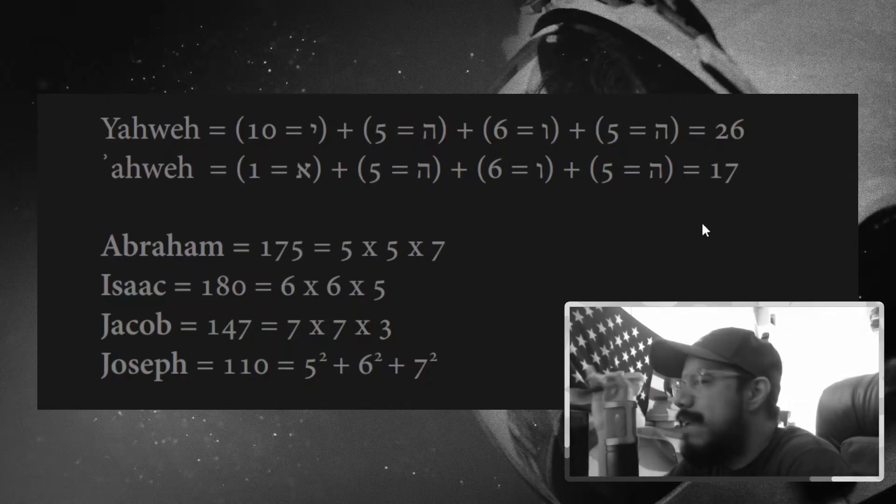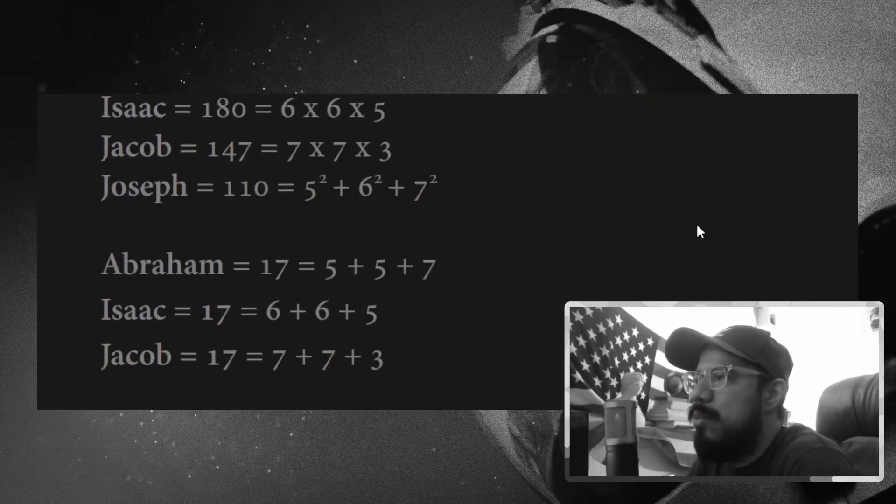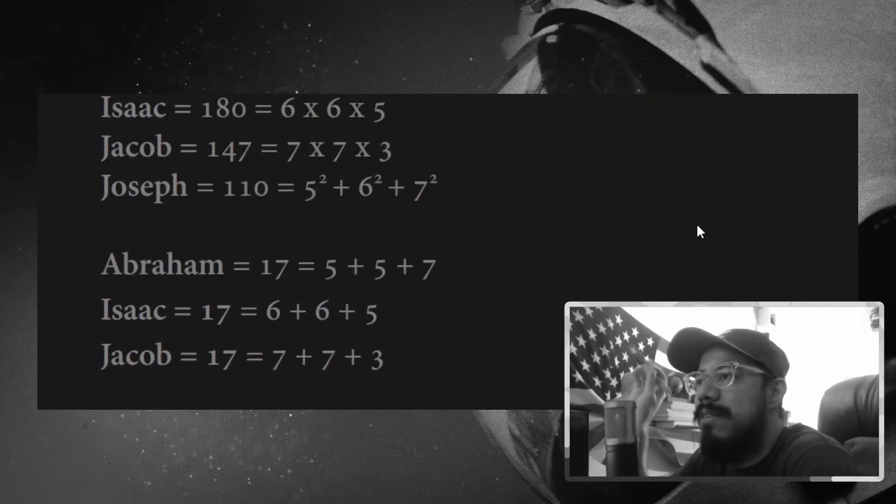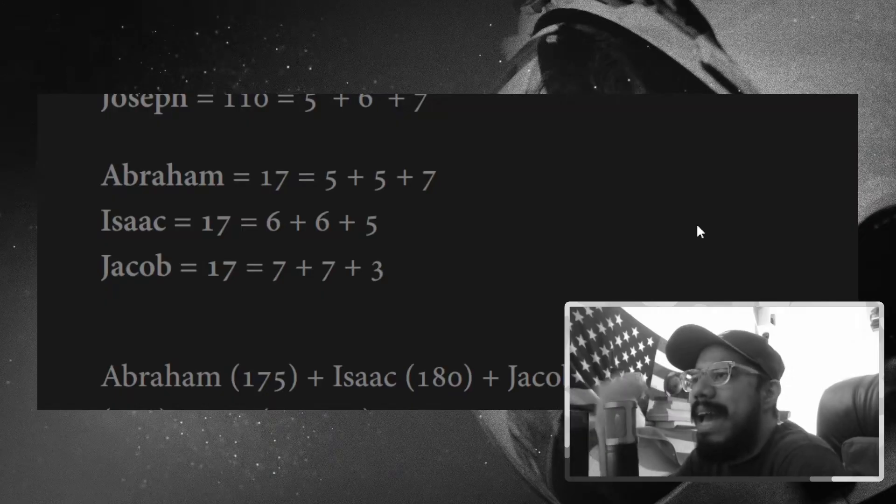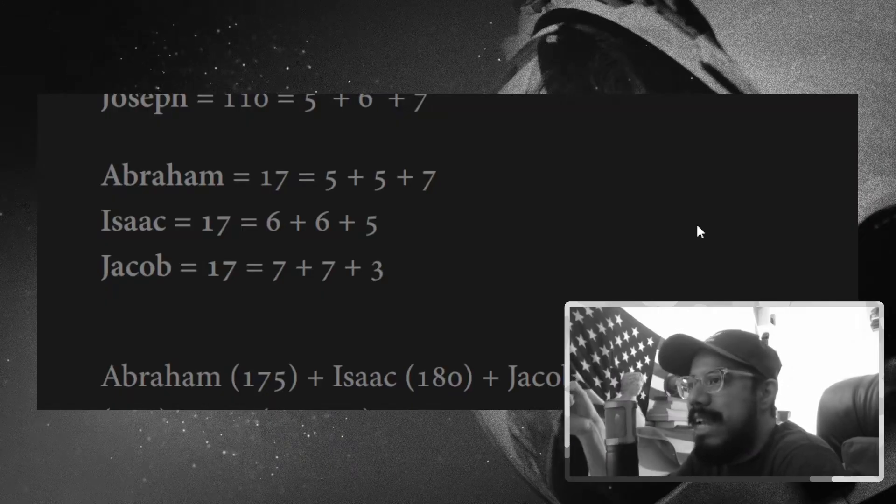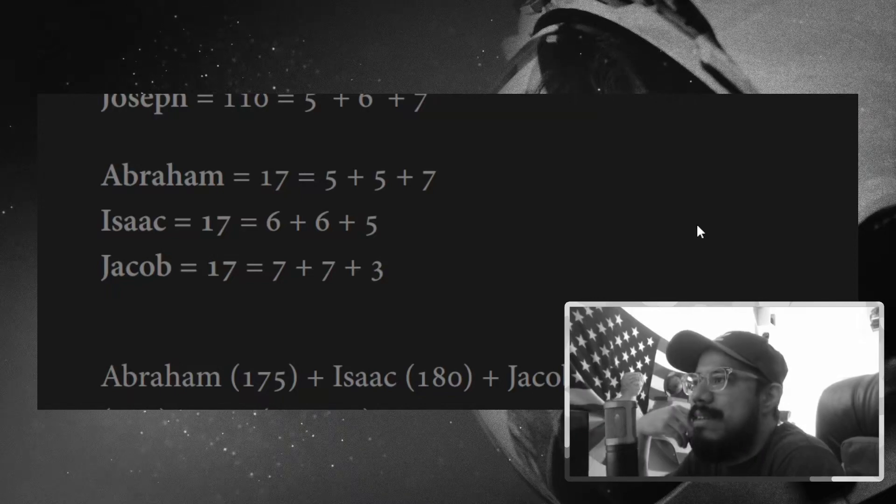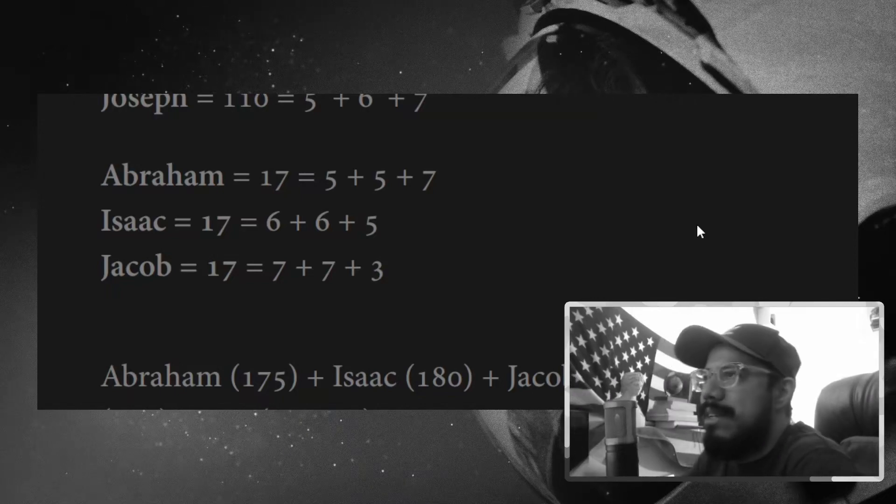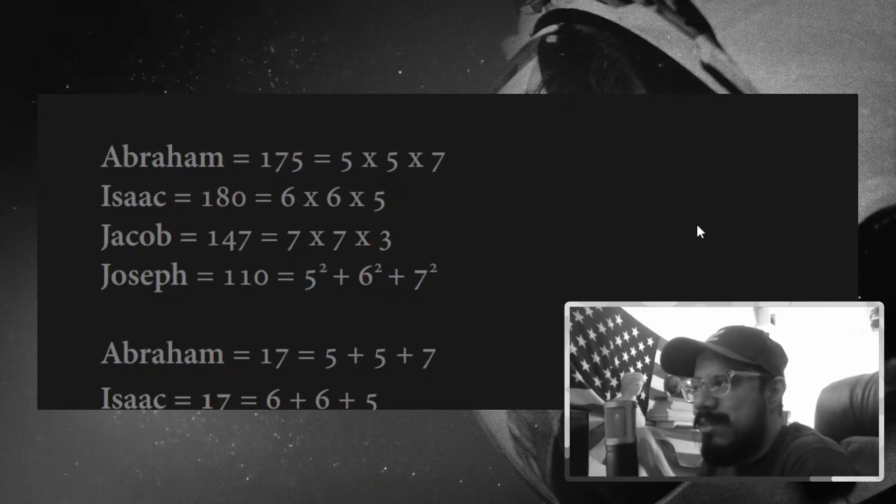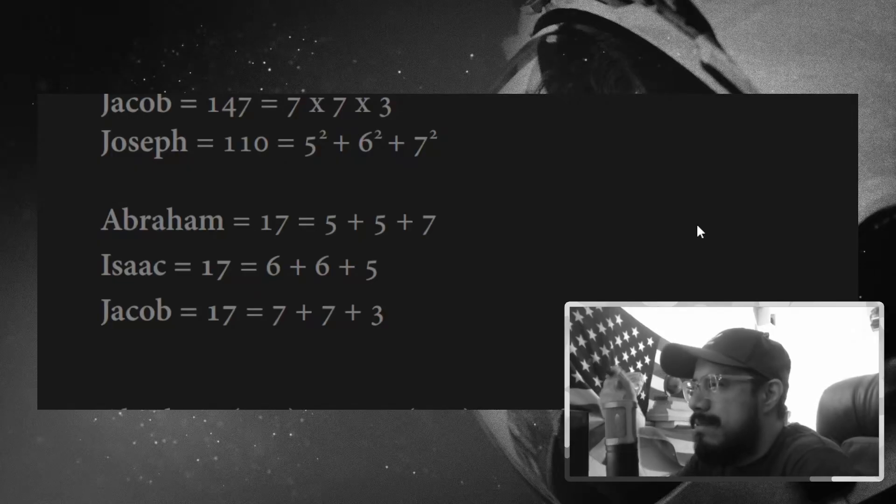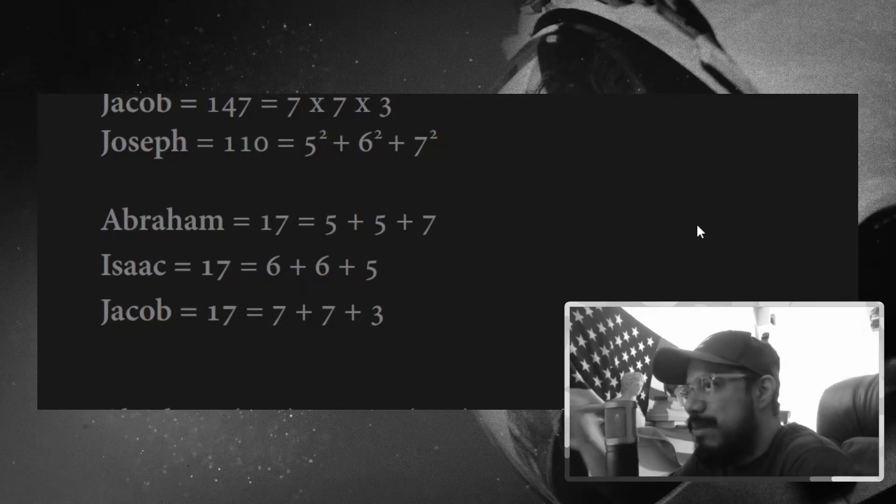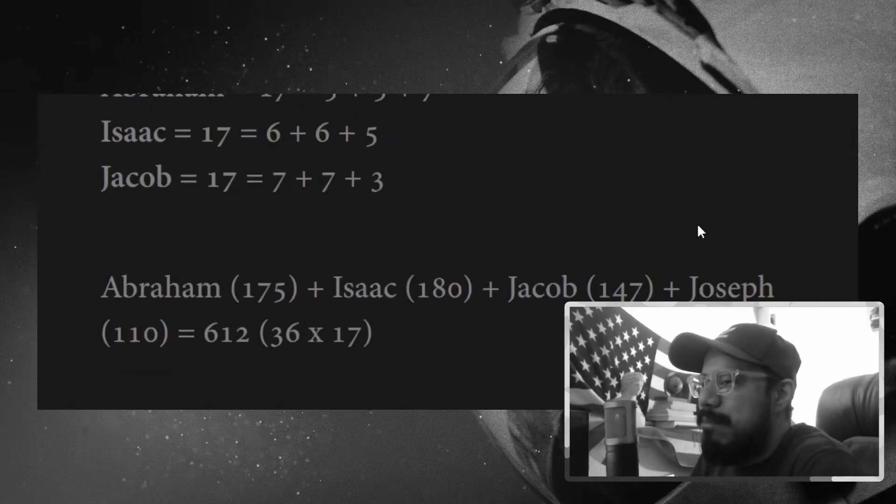But what they failed to appreciate or notice was its association with the divine name number. 17 is the control. 17 is what these numbers are all pointing back to. So instead of multiplying, if we add the numbers in each case of Abraham, Isaac, Jacob, we get 17. Now, of course, Joseph's age wasn't done in the same way because his was the sum of the quadratics. So he drops off the list there, but we're going to loop back to this set of numbers because there's one more number that could have been put in here, but it's not.